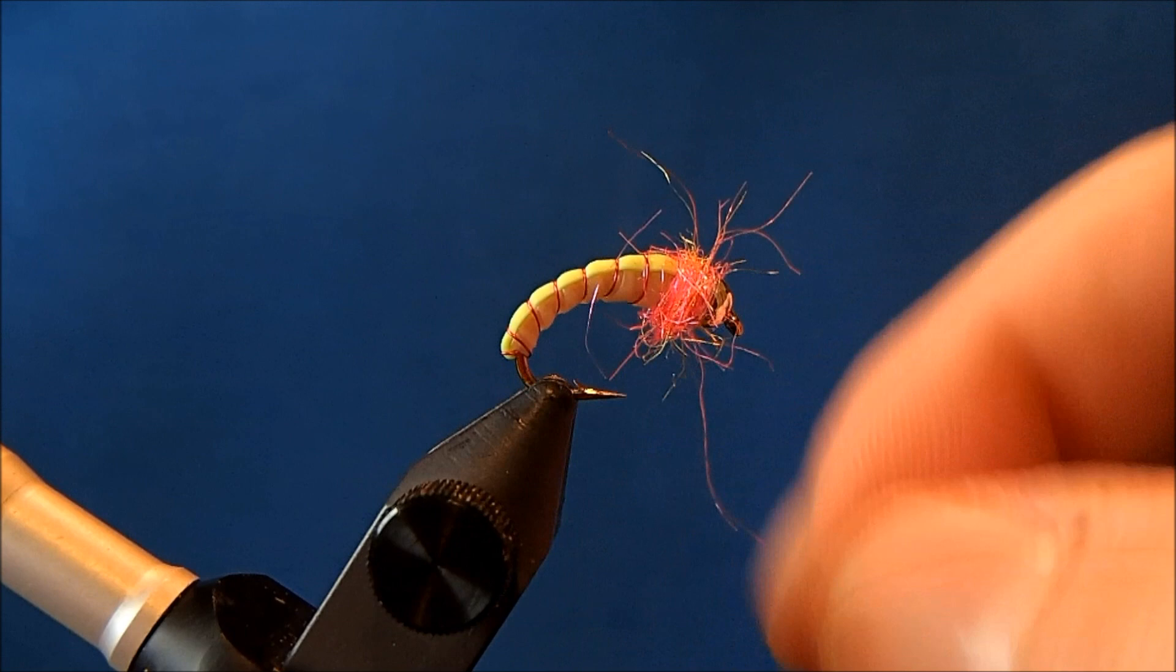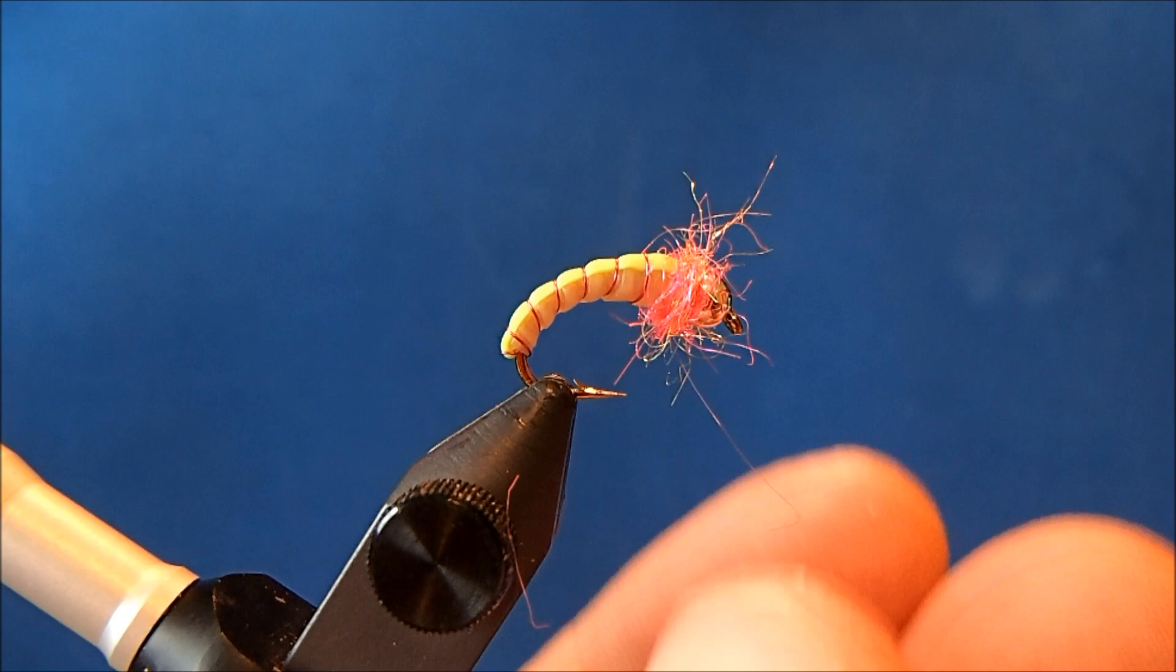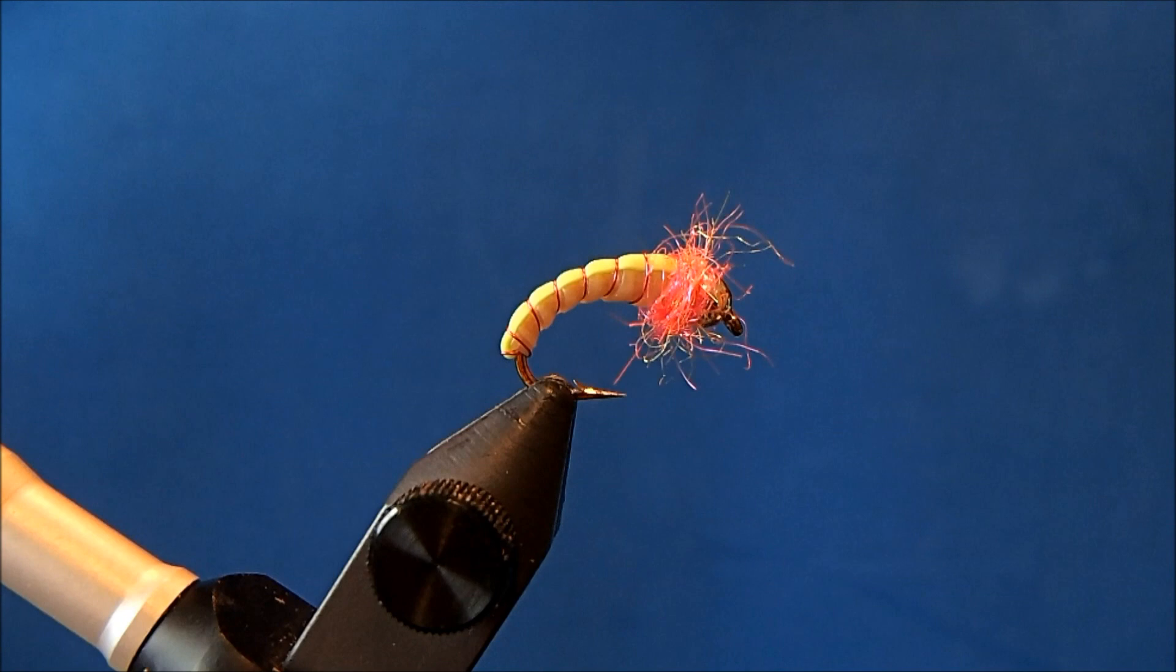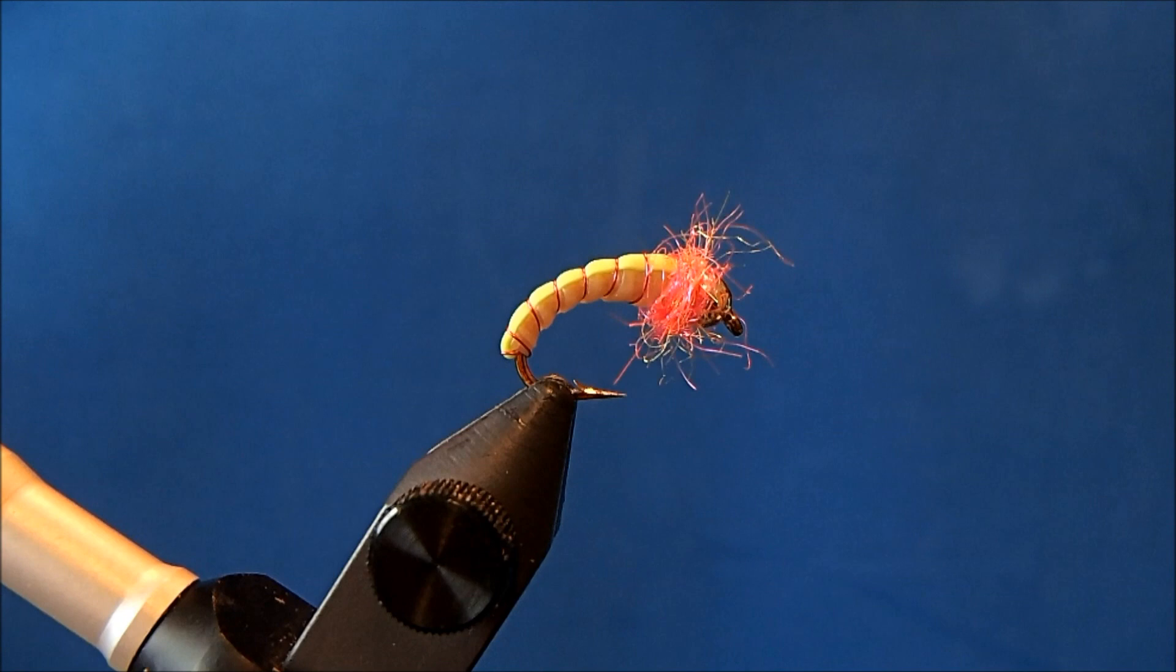And that's it. Really cool pattern. Again, love the texture, love the material of this. You can tie it in a variety of colors, just swap out the nymph skin and rib. And that is the Hammer Creek Super Ball.